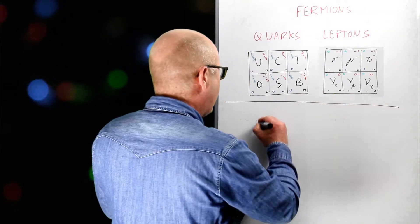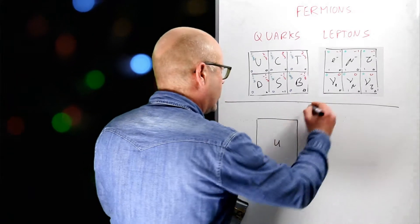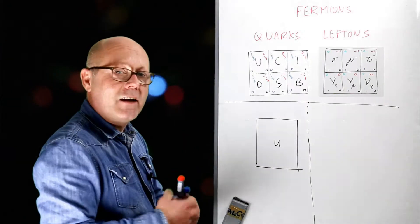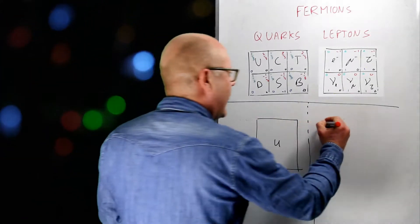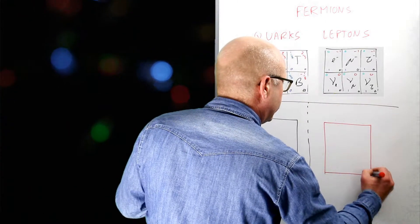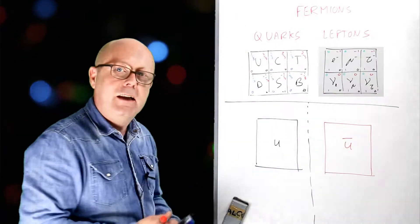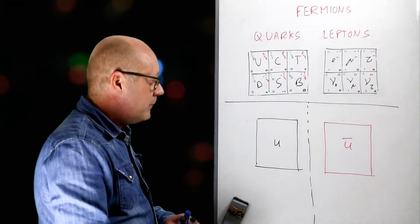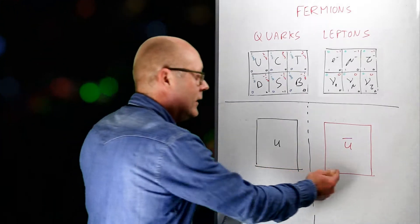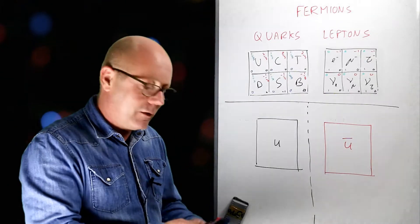Take for instance the up quark. I can imagine here a mirror, and on the other side of the mirror I would find the anti-up quark. I write 'up' here with a little bar on it to say it's anti-matter. Let's see how this transformation from matter to anti-matter changes the different parameters and characteristics of this particle.